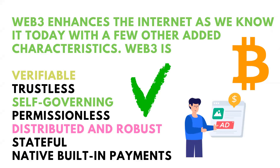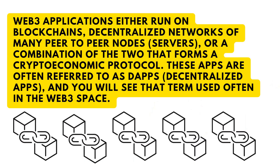Web 3 enhances the internet as we know it today with a few added characteristics. Web 3 is verifiable — you can verify any data on Web 3. Web 3 is trustless, meaning while using a Web 3 website you do not need to trust the other party. Web 3 is self-governing, permissionless, distributed, and robust — meaning there is no centralization. Web 3 is stateful and has native built-in payments with the help of cryptocurrencies. Web 3 applications run on blockchain or decentralized networks of peer-to-peer nodes, or a combination of both, forming a crypto-economic protocol.